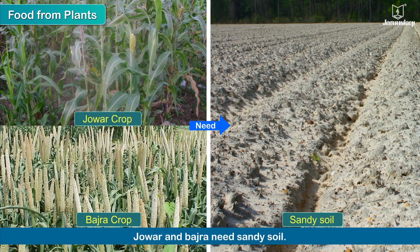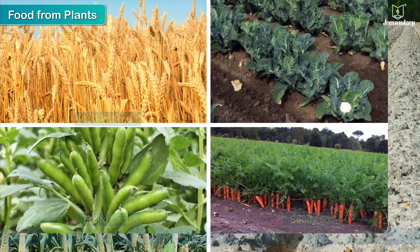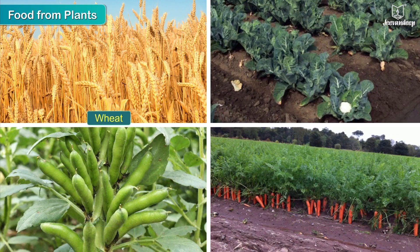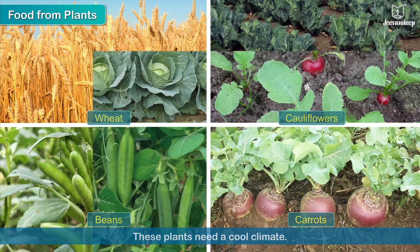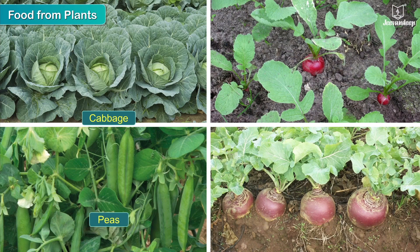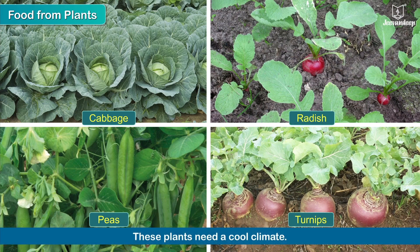Jowar and bajra need sandy soil and these crops are grown in winter. Wheat and certain vegetables like beans, cauliflowers and carrots need a cool climate. Cabbage, peas, radish and turnips also grow well in such conditions.